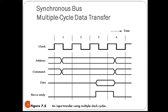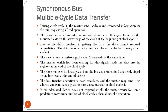Some delay is involved in getting the data, so the slave cannot respond immediately. The data becomes ready and is placed on the bus in clock cycle three. At the same time, the slave asserts a control signal called the slave ready signal. The master, which has been waiting for this signal, stores the data into its input buffer at the end of clock cycle three.